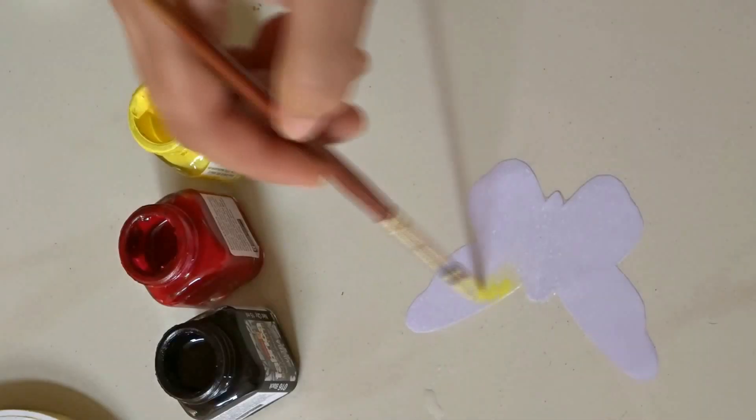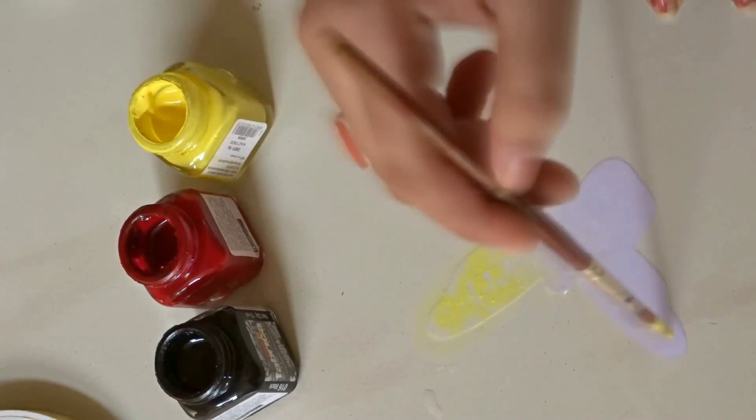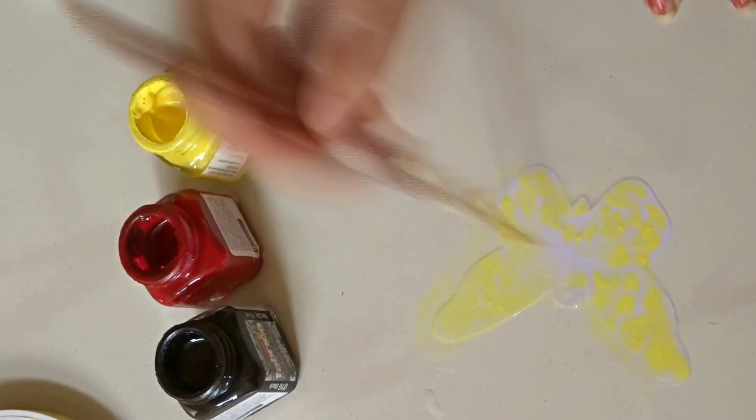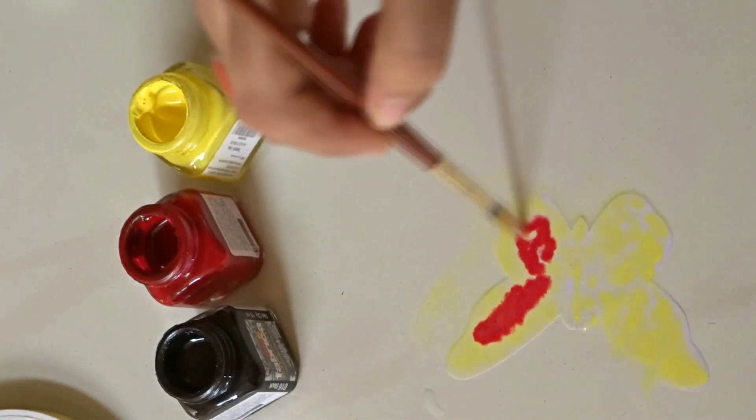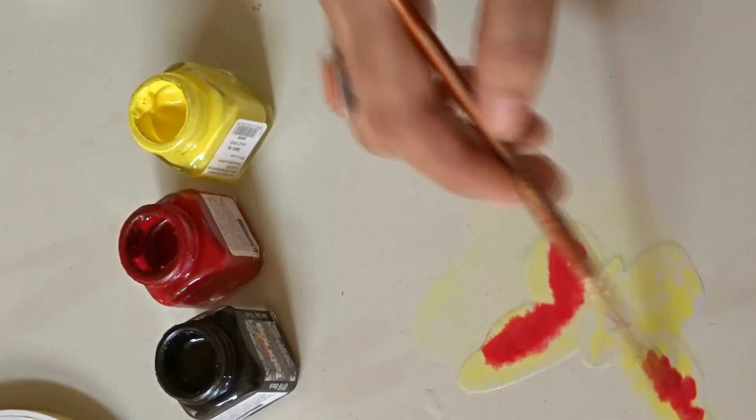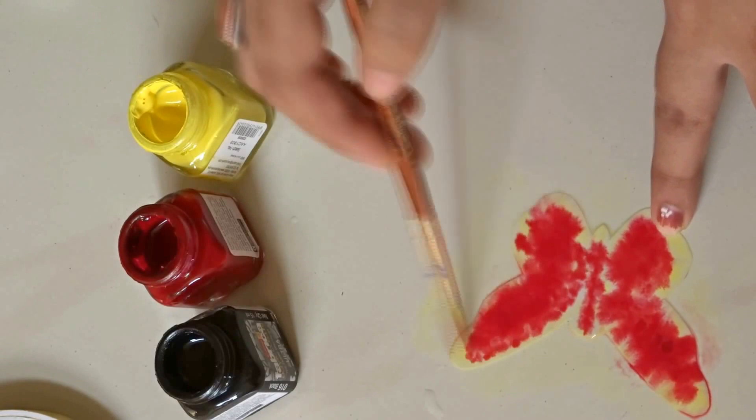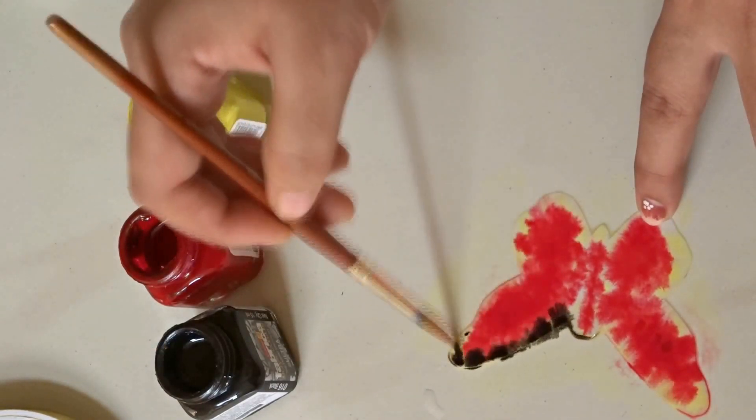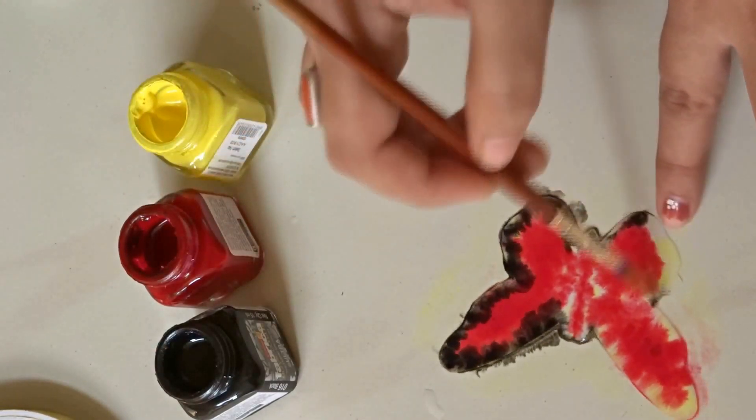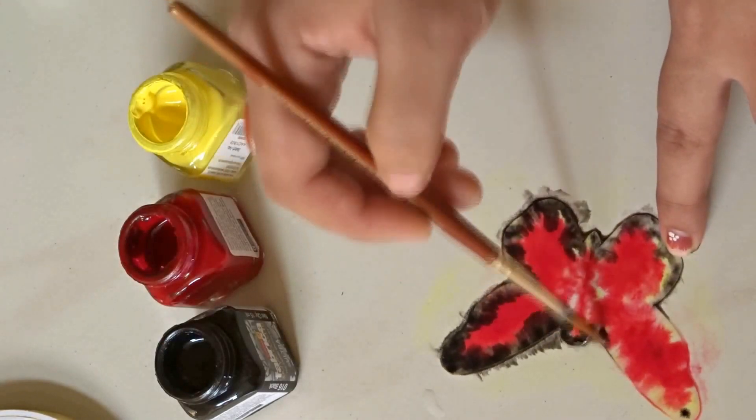Then take your brush and start coloring it with whatever color you want. You don't need to be perfect, just do it roughly. While doing the outlines, just lightly touch the edges with the brush and the color will automatically spread.